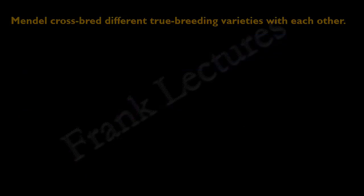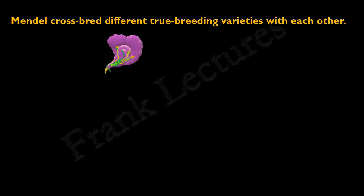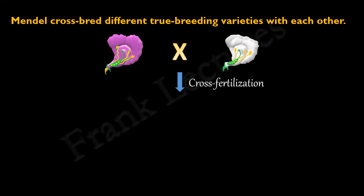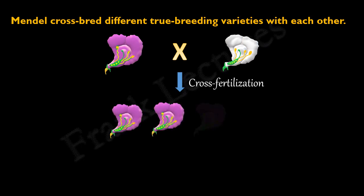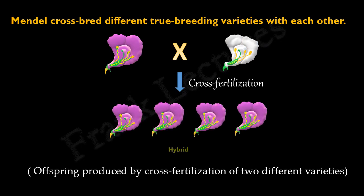Mendel crossed different true breeding varieties with each other. For example, plants with purple flowers were cross-fertilized with plants with white flowers. The offspring produced by cross-fertilization of two different varieties is known as a hybrid.